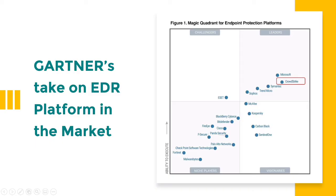The EDR market has gained a lot of momentum, and companies that opt for SIEM tools now are also considering an Endpoint Detection and Response tool to ensure endpoint coverage. Gartner released its Magic Quadrant in August 2019, and CrowdStrike, Microsoft, Symantec, Trend Micro, and Cephas were listed as leaders.